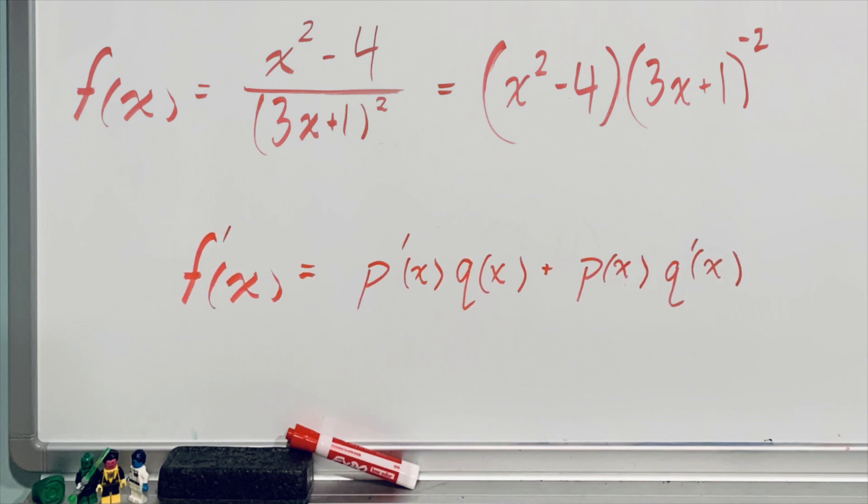The product rule says find the derivative of the first function, multiply by the second function, and then add the first function multiplied by the derivative of the second function. Still a pretty complex process, but not as bad as the quotient rule.